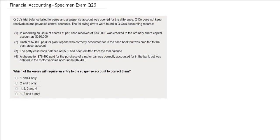In this question you are being asked to decide which of the errors will require an entry to the suspense account to correct them. In the information provided it tells you that the trial balance failed to agree and that they created a suspense account for the difference. They don't keep control accounts and then four errors are given for us to decide whether there is an impact on the suspense account.